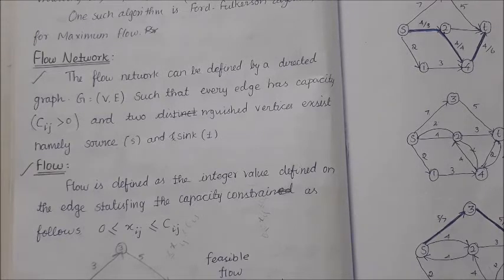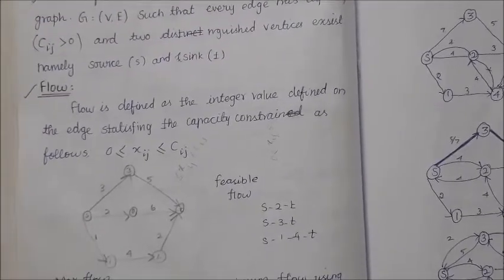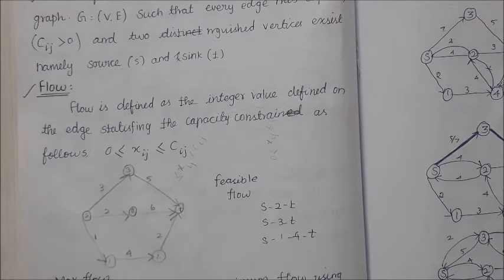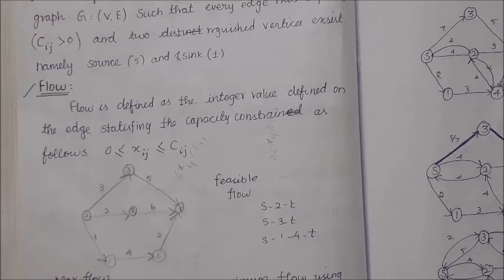We are going to travel from source to sink, where source stands for S and sink stands for T. Between the source and sink there needs to be a capacity, and among that capacity we are going to choose the minimum capacity value — that is called the flow. Flow is defined as a numerical or integer value defined on the edges connecting two nodes or vertices. The capacity must satisfy the condition that it is greater than or equal to zero, meaning there needs to be connectivity between the two vertices.